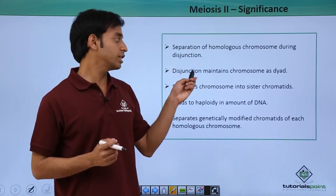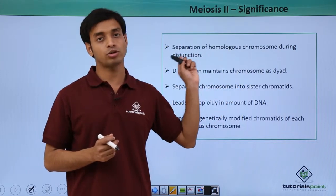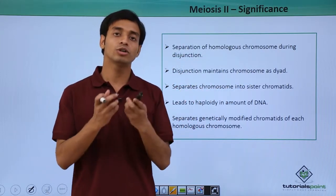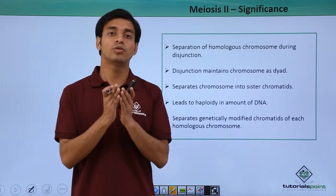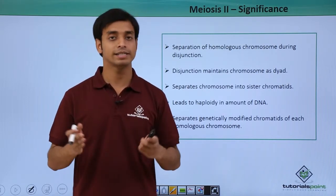The disjunction maintains the chromosomes as dyads. Because of the process of disjunction, the chromosomes are maintained as dyads. And hence, in Meiosis II, the sister chromatids get separated.